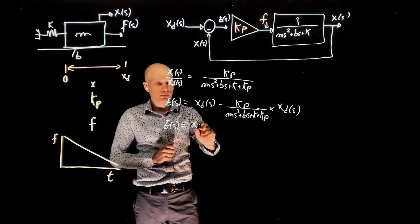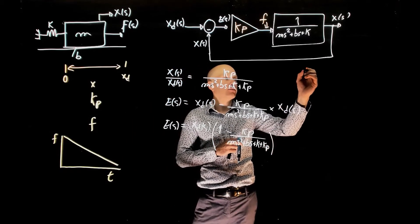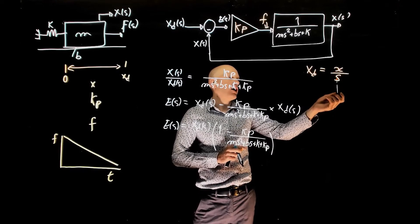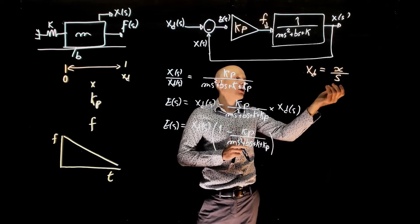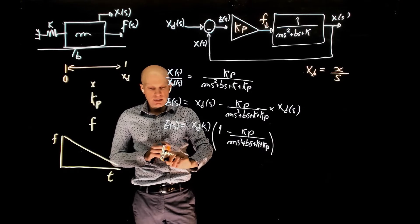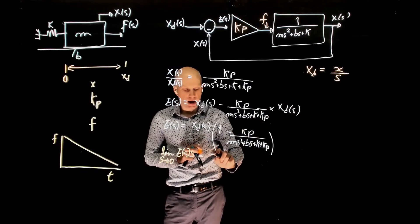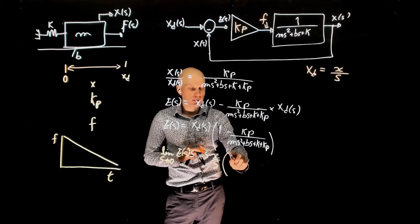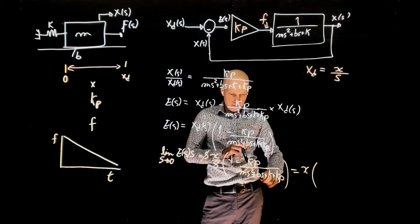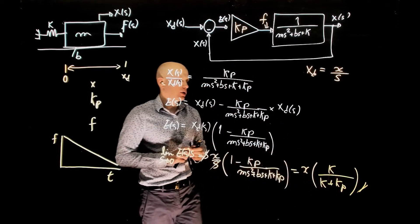We can factor that out. Giving the system a step input xd = x/s, where x is the desired displacement magnitude and 1/s represents the step input, we find the steady state error using the final value theorem: the limit of s·e(s) as s→0. This simplifies to k over (k + kp), which is the steady state error.